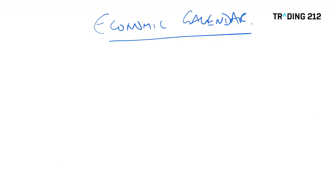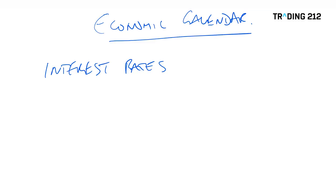So what are the important events? Let's take a look at some of the major economic announcements we should be aware of every month. The first one is interest rates. Every month the central banks — the European Central Bank, the Bank of England, in the US the Federal Reserve, in Japan the Bank of Japan — will have an interest rate announcement. Now we've been in a low interest rate environment for many years, but these are starting to creep up.